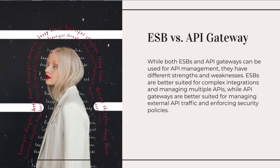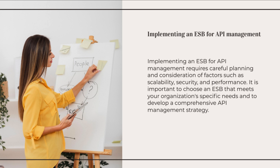Common integration patterns such as request/response, publish/subscribe, and event-driven architectures supported by ESB API Manager are provided. Section seven covers deploying and scaling ESB API Manager, discussing deployment options including on-premises, cloud-based, and hybrid deployments, as well as scalability considerations like load balancing, clustering, and caching, and best practices for optimizing resource utilization and performance tuning.